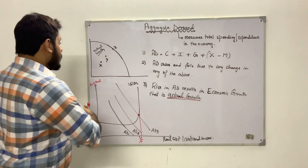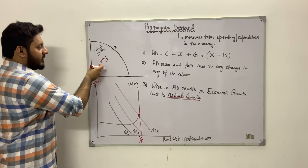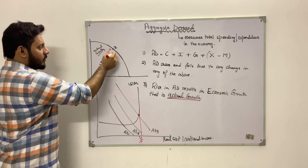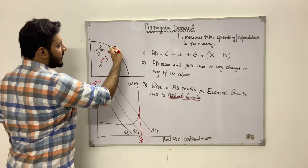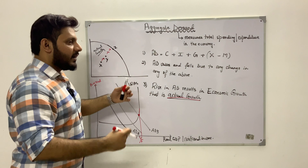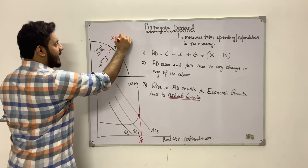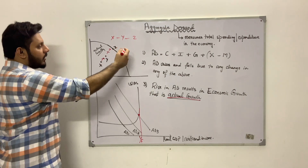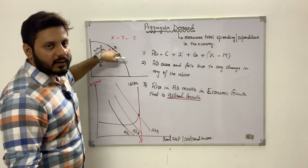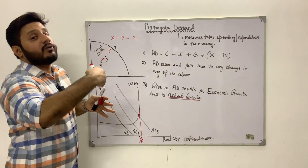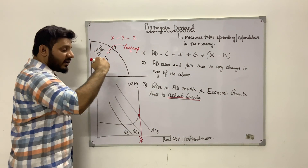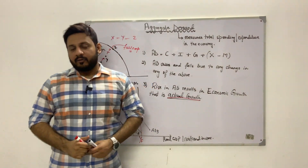On a production possibility curve, actual growth is shown as a movement from inside the curve — from point X to point Y, then from Y to Z — where more and more existing resources are being utilized. This movement from inside the curve toward the curve represents moving closer to full employment. Point Z represents all resources being fully employed.